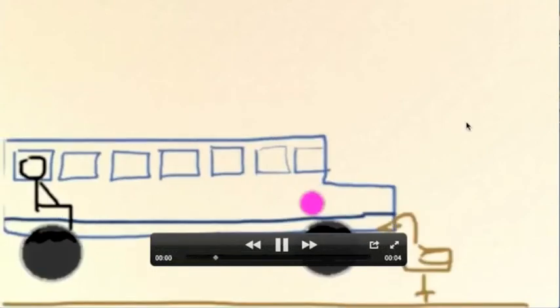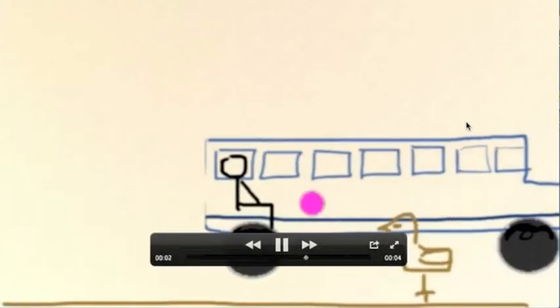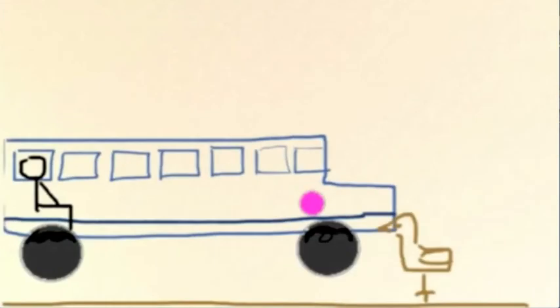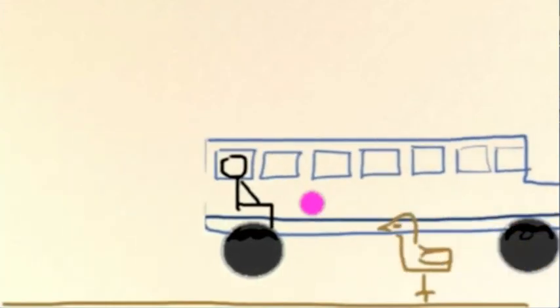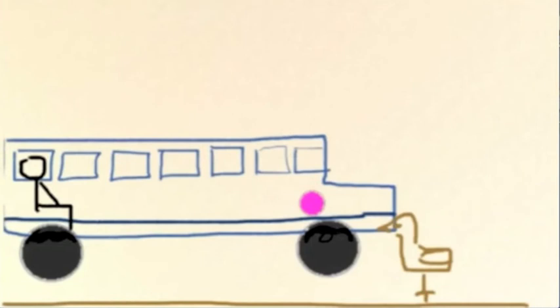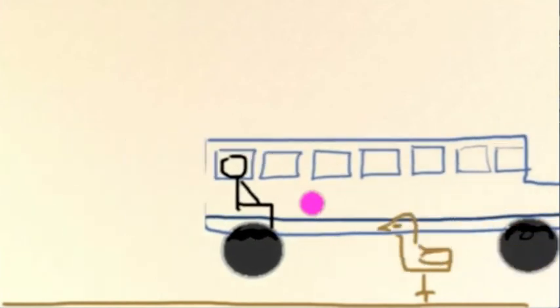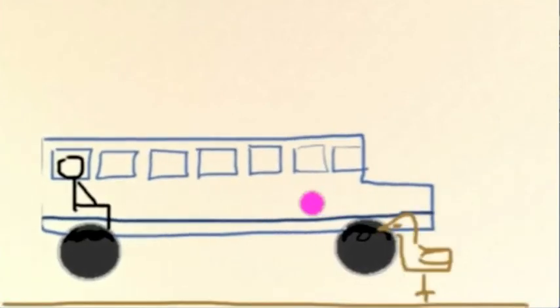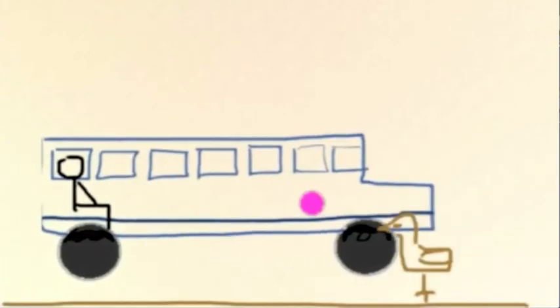Okay, so here's the animation. We have a bus here and an observer inside the bus, and a ball also inside the bus, and a chicken that is standing on the ground. So we have two systems of reference here, the observer inside the bus and the chicken. So first let's focus on the motion of the ball with respect to the observer inside the bus.